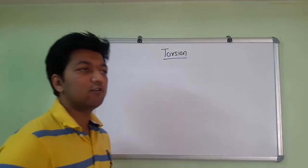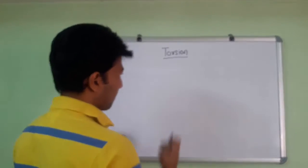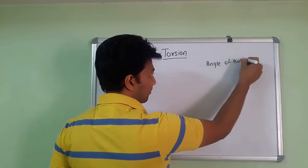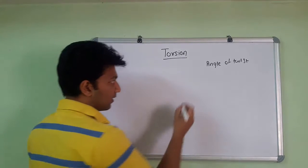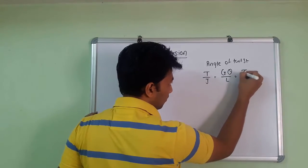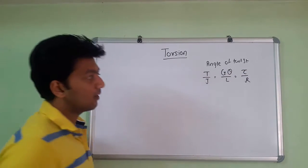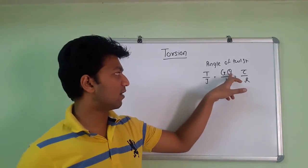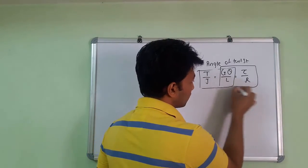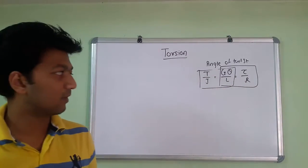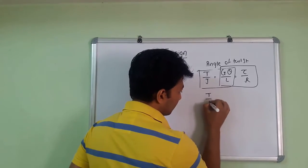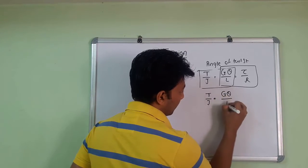Now we understand how to find the angle of twist. We have the formula that T by J equals G theta by L equals tau by R. Here the angle of twist is theta. We have to find this value, so that is why we use these two equations. Anything we can find, whatever is given in the problem, depends on that.